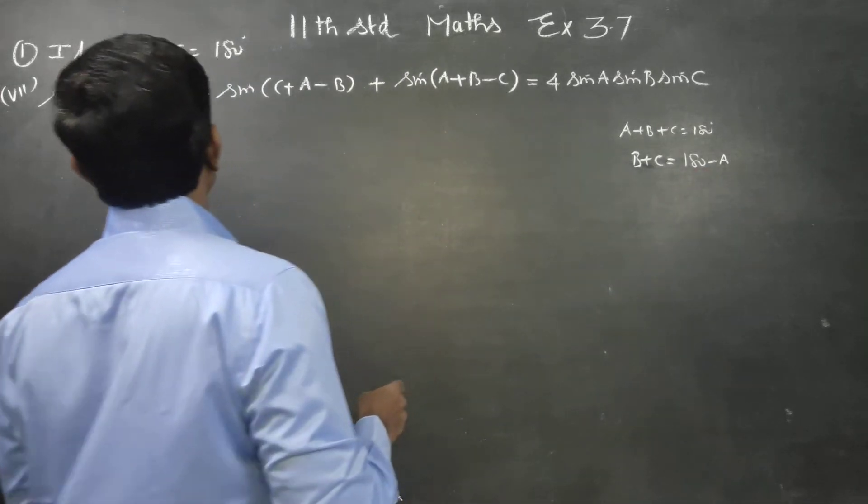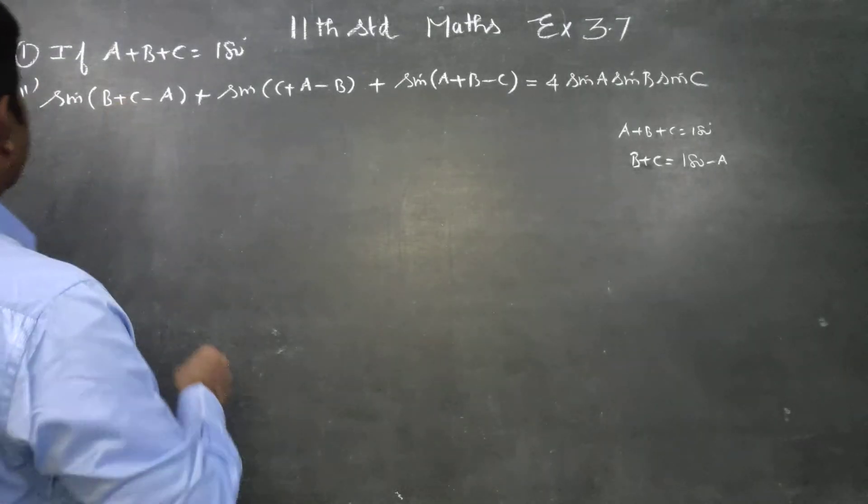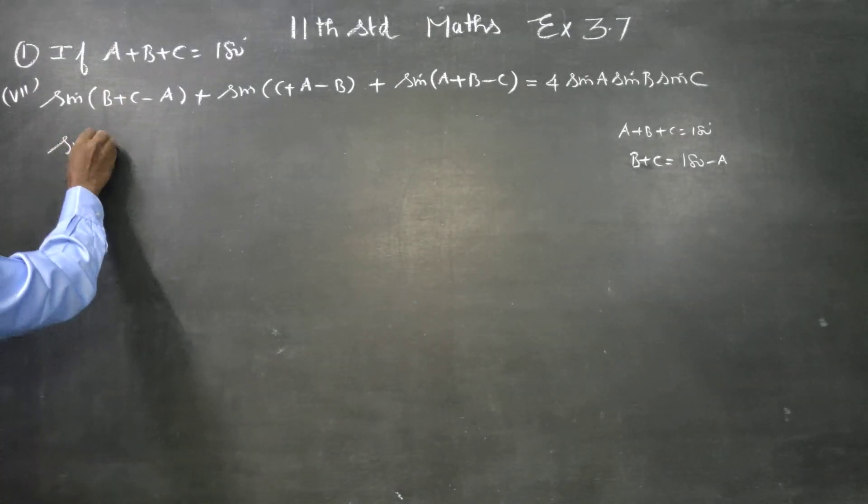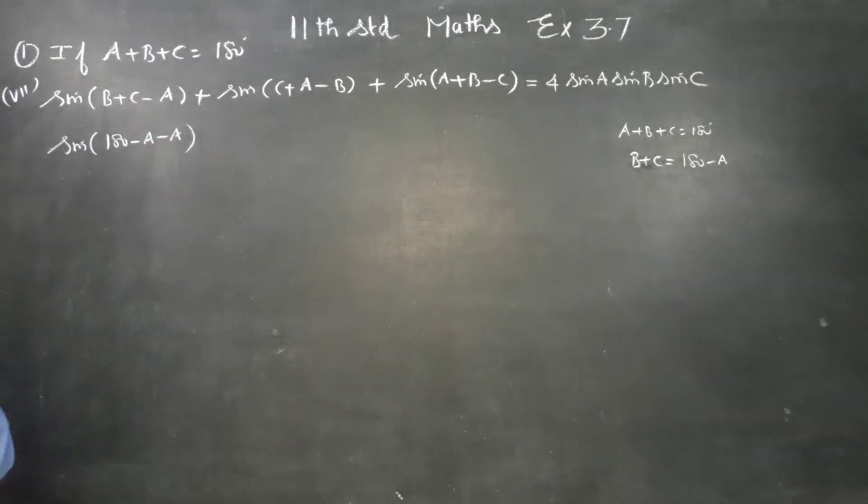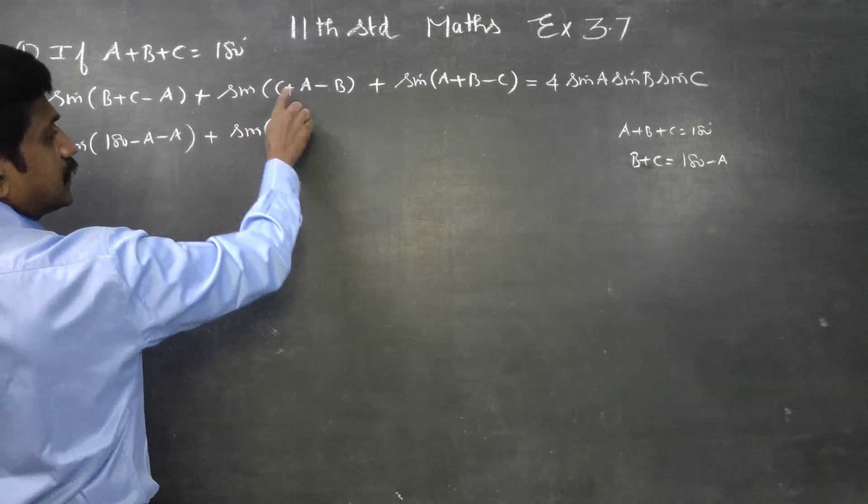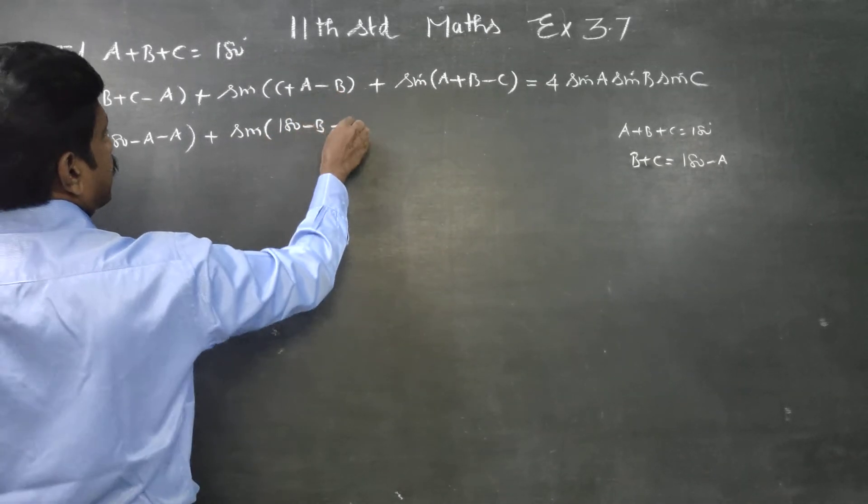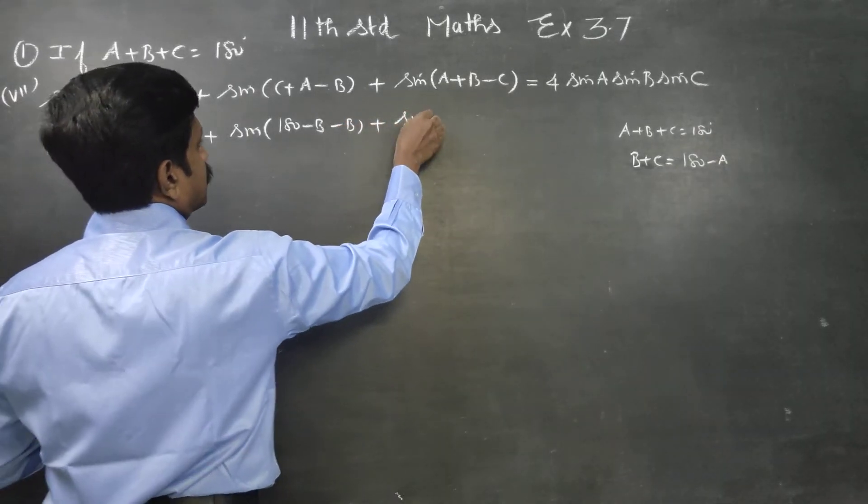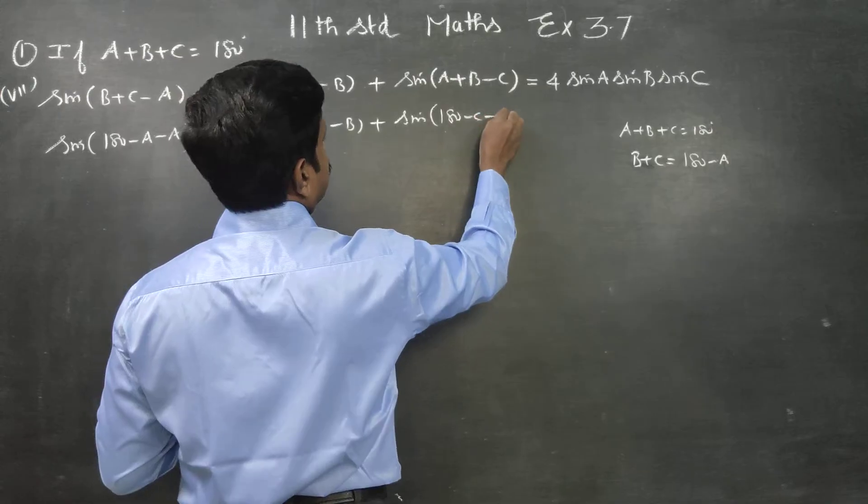I am going to substitute instead of B plus C, 180 minus A. A plus C plus A is equal to 180 minus B. A plus B is equal to 180 minus C. Right?